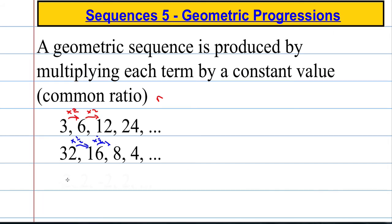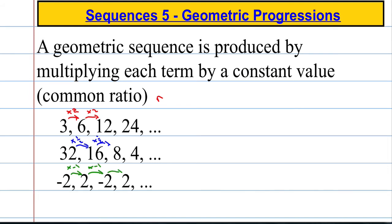How about the next sequence? Negative 2, 2, negative 2, 2. We can see that each time we're multiplying by negative 1. We multiply that by negative 1 and so on and so forth.